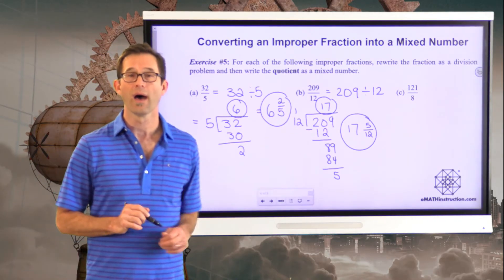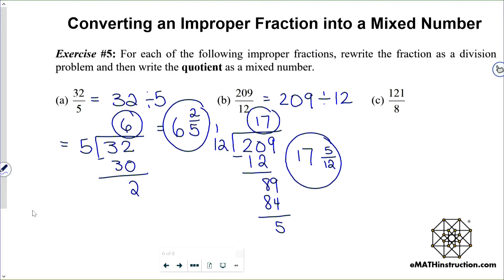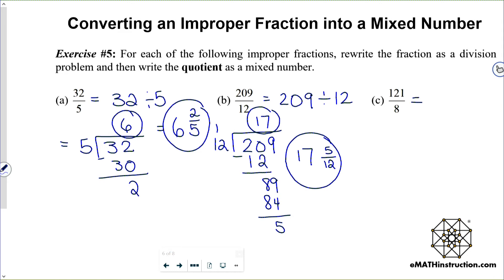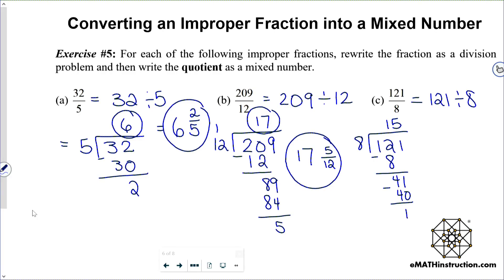Pause the video now and try letter C on your own. For 121 eighths, that's the same as 121 divided by eight. Eight goes into 12 one time; subtract to get 41. Eight goes into 41 five times; subtract, and I'm left with just one. So 121 eighths is the same as 15 and one eighth.